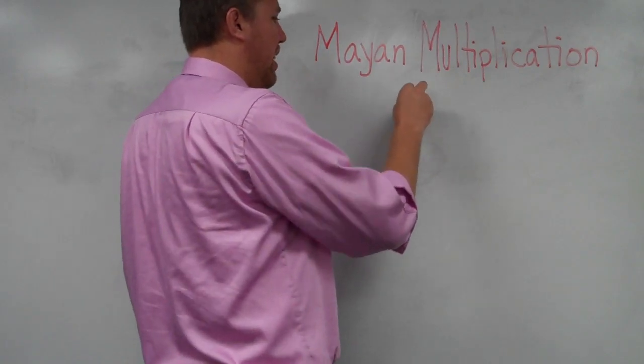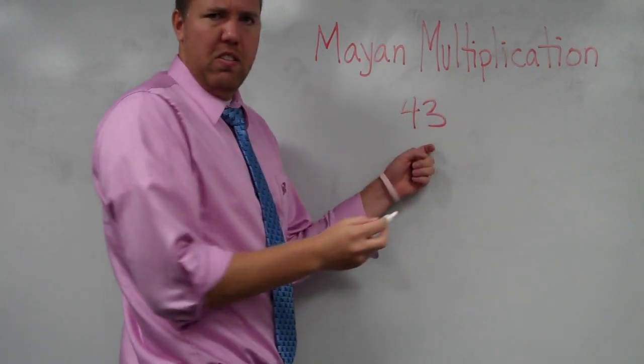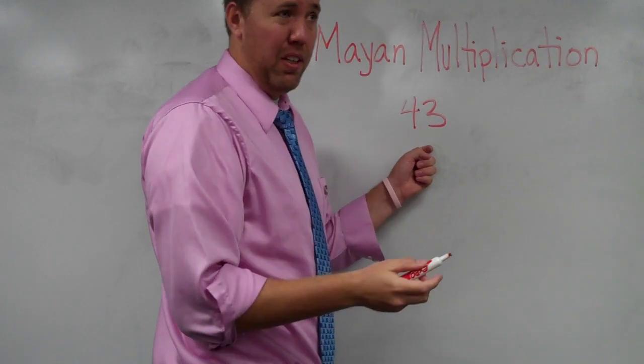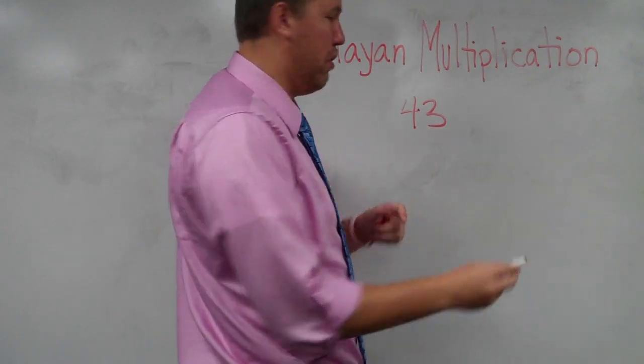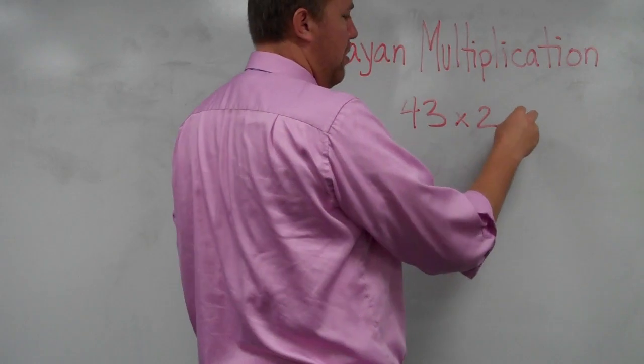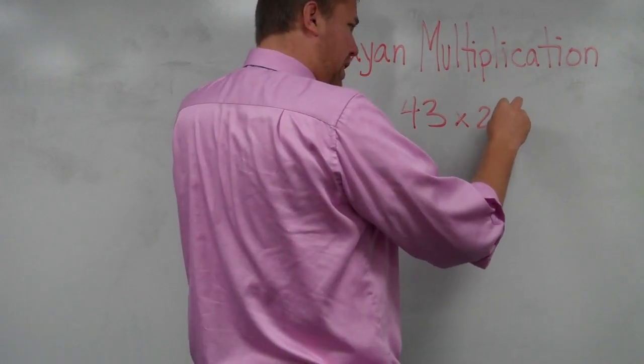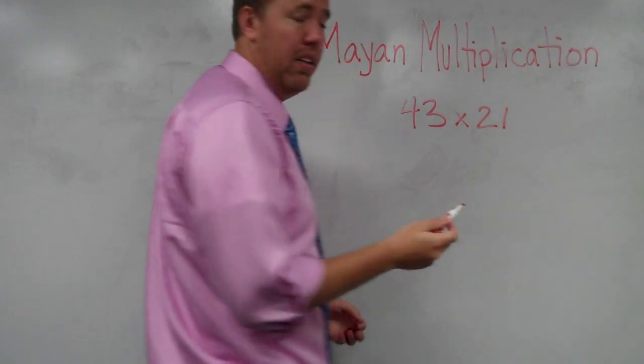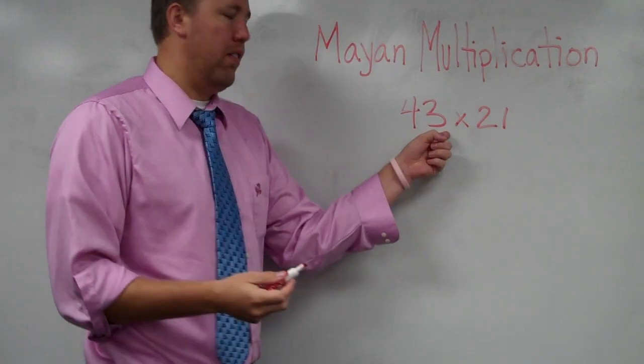Okay, so this one works best with lower digits. It doesn't work as easy with like 6 through 9 as it would anywhere else. So I'm just going to do 43 times 21. That'll work nicely. Okay, 43.